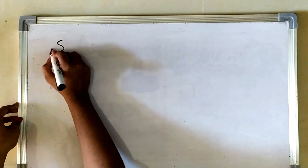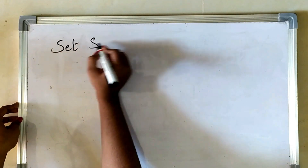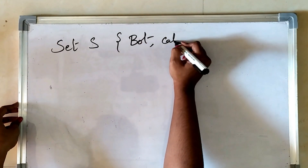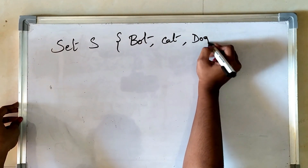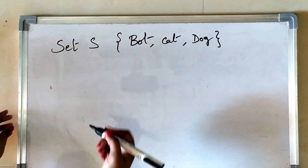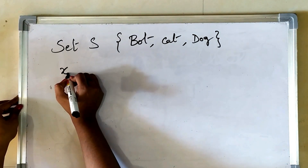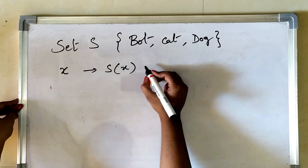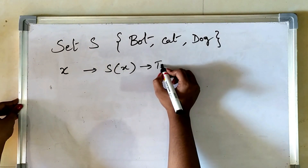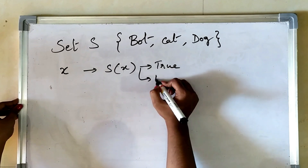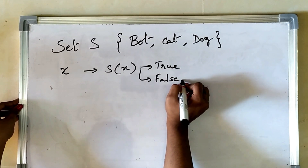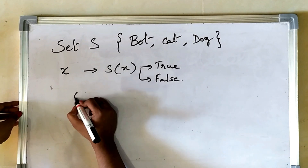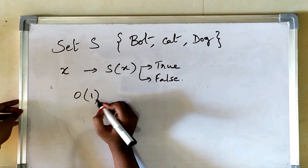First, let's see why we need a bloom filter. Say we have a set S which contains 'bot', 'cat', and 'dog'. Given an element x, we have to find if that element x is present in the set or not — whether S(x) is true or false. Using the standard set algorithm we can do this in O(1) time.